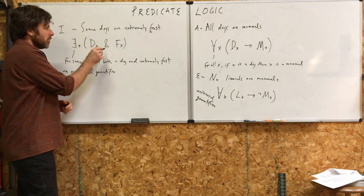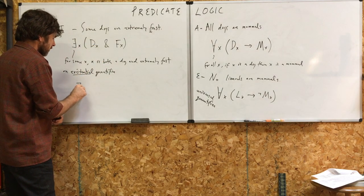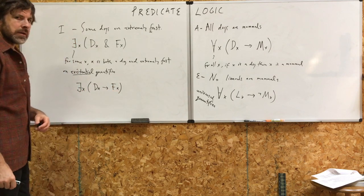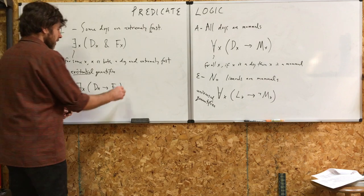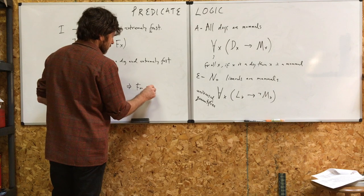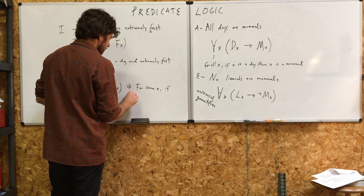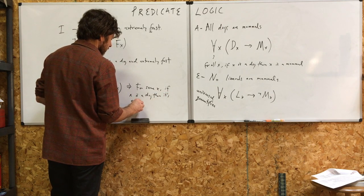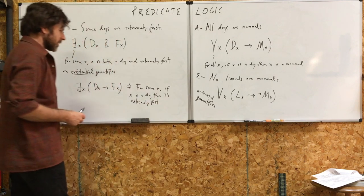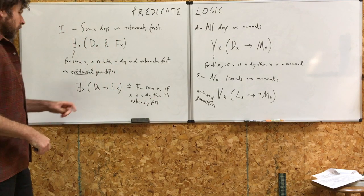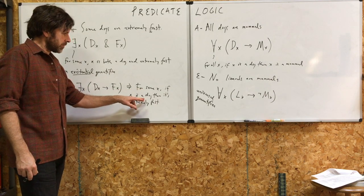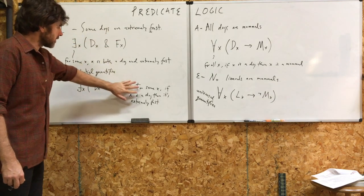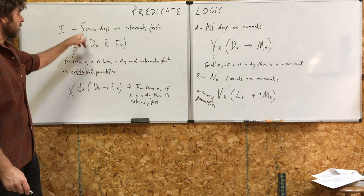Going back to this — it's important that you use the ampersand here. Imagine if you symbolized the I statement as: for some X, D-X arrow F-X. That means 'for some X, if X is a dog then it's extremely fast.' That's not saying any dogs exist, and it's not saying there's at least one thing in the universe that is an extremely fast dog. But the correct symbolization with the ampersand does say that. So the arrow version is an incorrect, faulty symbolization of this I statement.